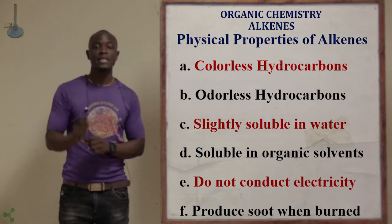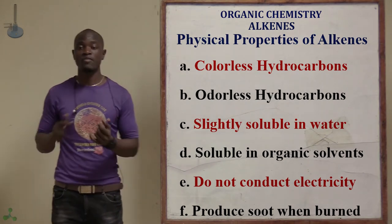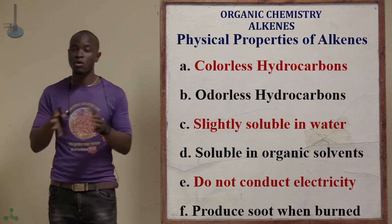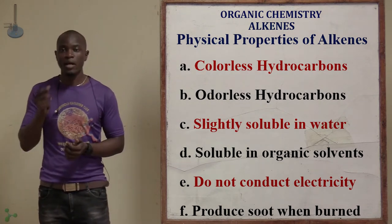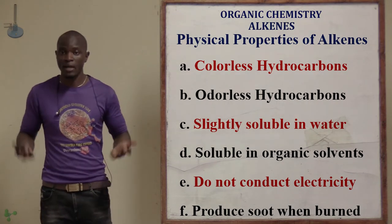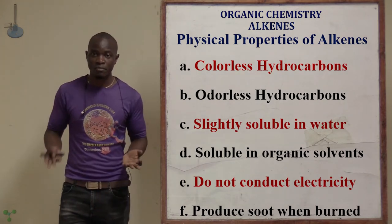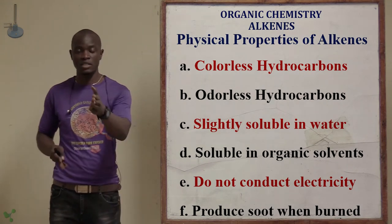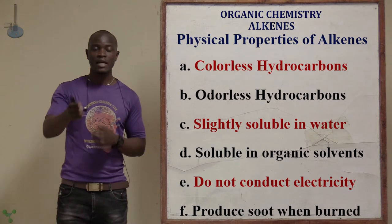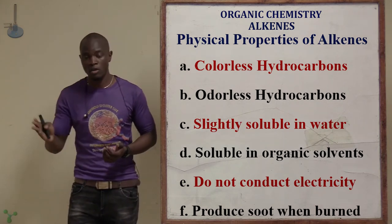Organic solvents are non-polar solvents. In polar solvents like water, alkenes are slightly soluble, but in organic solvents — like oil and petrol, which do not have polarity — they are highly soluble. Alkenes also do not conduct electricity because they are non-polarized; they don't have positive or negative polarity. Since electricity follows a channel of positive and negative, and these molecules only carry one type of charge, they cannot conduct electricity.